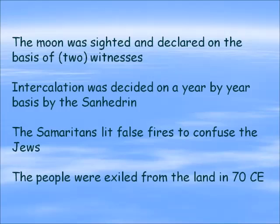According to ancient sources such as the Talmud, the calendar was set as follows: designated witnesses would wait to observe the new moon, knowing it would appear on either the 29th or 30th day. They would bring their evidence to the Sanhedrin, which would declare the new moon. This was communicated to the people by signal fires sent from village to village, town to town, hill to hill, so the people would know the new month had been declared in Jerusalem. In the springtime, whether an extra month was needed was decided by the Sanhedrin on a year-by-year basis, based on evidence of agricultural production and the rainy season.